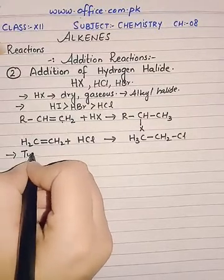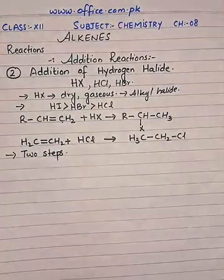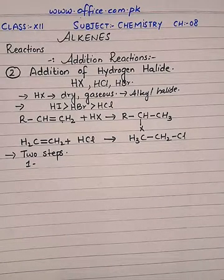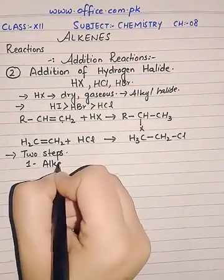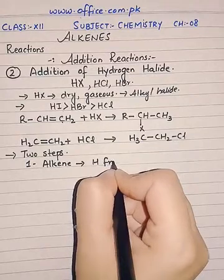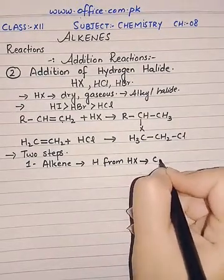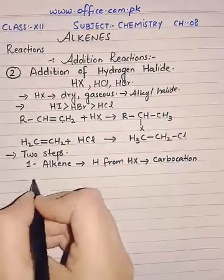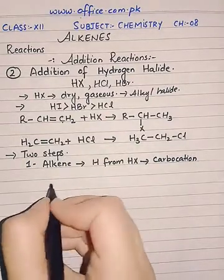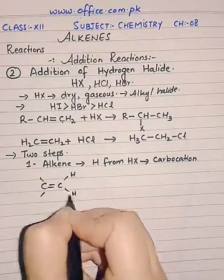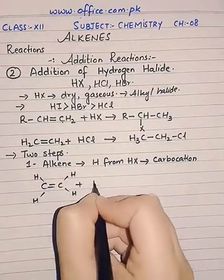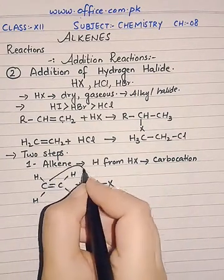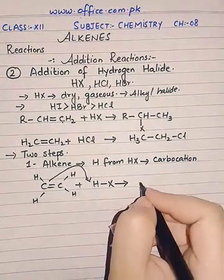This addition of hydrogen halide to an alkene is completed in two steps. In the first step, the alkene accepts the proton from the hydrogen halide and forms a carbocation. The alkene accepts hydrogen from the hydrogen halide, and as a result we obtain a carbocation — a cation containing a carbon atom. Let me explain the first step with the help of an example using ethene, which will be attacked by a hydrogen halide.